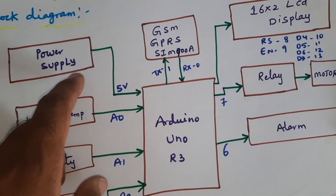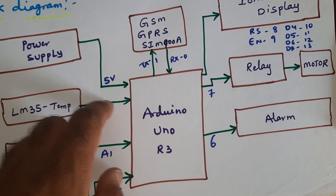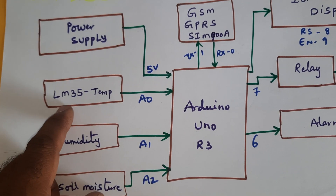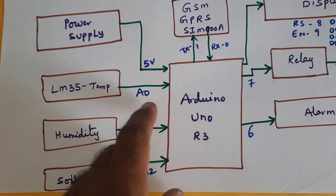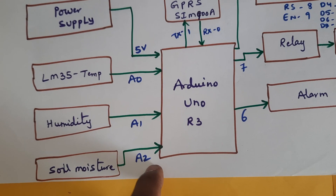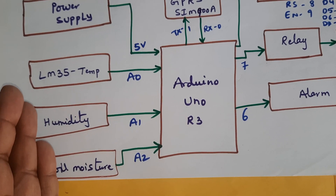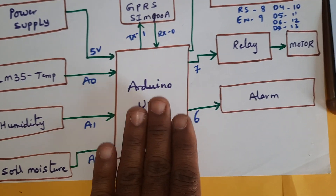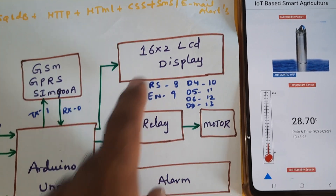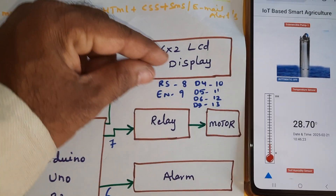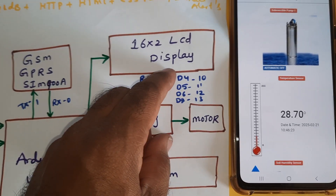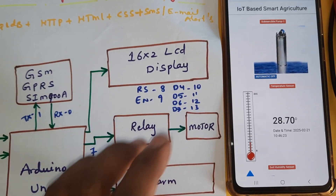We are using a 0 to 9 volt adapter as power source, which converts to pure DC output connected to the Arduino Uno R3 board. The LM35 temperature sensor is connected to A0, humidity sensor to A1, and soil moisture sensor to A2. These are all analog sensors that convert analog to digital. Data is sent to a 16x2 LCD character display showing whatever process is running.